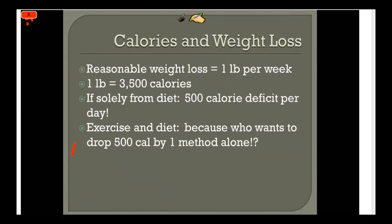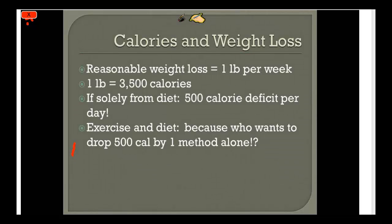One pound is equivalent to about 3,500 calories. It's reasonable for a patient trying to lose weight to lose about a pound a week. If solely from diet, that equals a 500 calorie deficit per day — which is a lot to cut from diet alone, and would require about an hour of hard cycling through exercise alone. The best recommendation is a dual approach: combine exercise with reducing caloric intake, which is more realistic for most people.